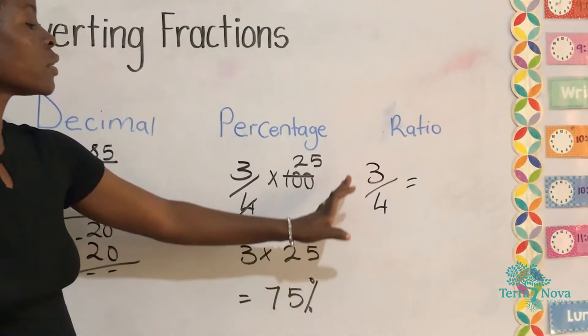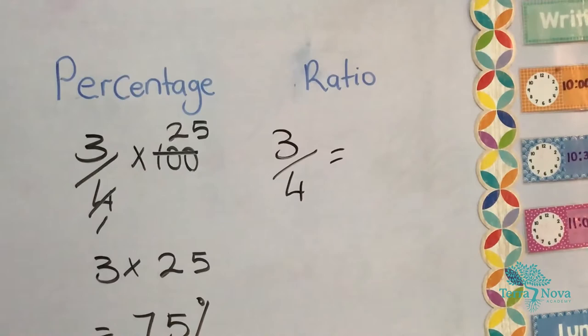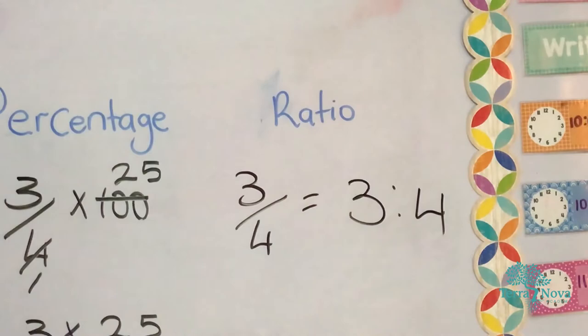We are going to change our fraction to ratio. And to change our fraction to ratio, just get the numerator to the denominator, which is 3 to 4. And that is our answer.